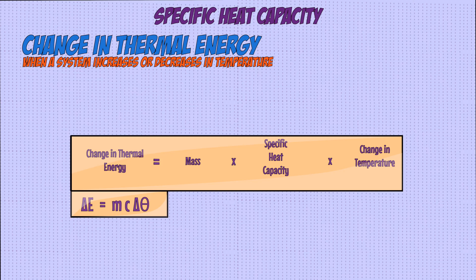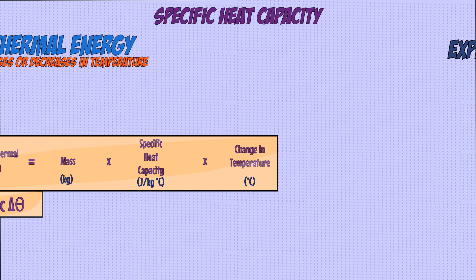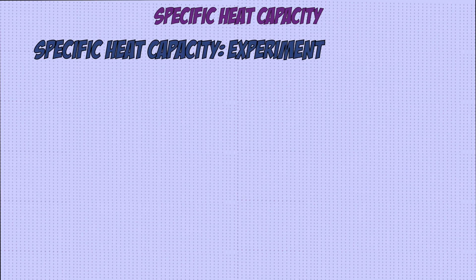Change in thermal energy is measured in joules, mass is measured in kilograms, specific heat capacity is measured in joules per kilogram per degree C, and change in temperature is measured in degrees C. So now let's look at an experiment on how to find the specific heat capacity of a substance.